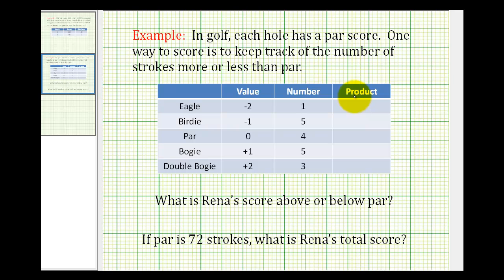So the first step is to determine the result of the eagles, birdies, pars, bogeys, and double bogeys. We'll do that by determining the product of the value and then the number of each score. And the order in which we multiply these doesn't matter because multiplication is commutative, meaning we can change the order and the product is the same.